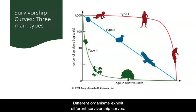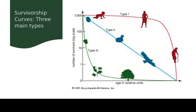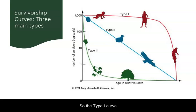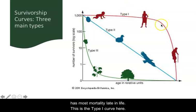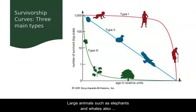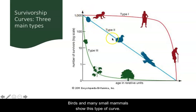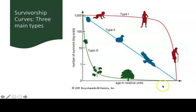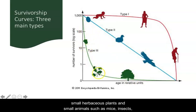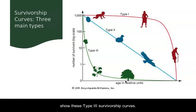Different organisms exhibit different survivorship curves. The three types correspond to patterns of mortality: late in life, even throughout life, or concentrated early in life. The Type 1 curve has most mortality late in life, as seen in humans, elephants, and whales. The Type 2 curve shows constant mortality throughout life, seen in birds and many small mammals. The Type 3 curve shows high mortality at the earliest life stages, typical of small herbaceous plants, mice, insects, and organisms that grow fast and reproduce early.